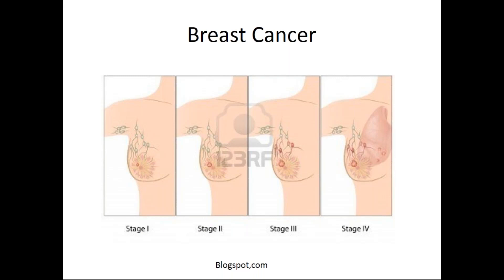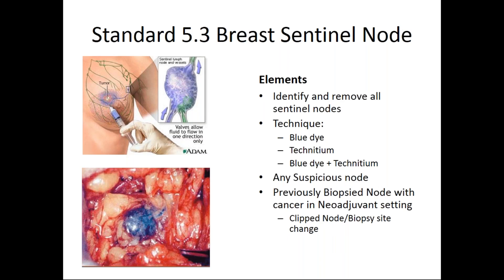The first two standards are for breast cancer. Standard 5.3 involves sentinel node mapping for breast cancer. Key elements in the operative synopsis are that we should identify and remove all sentinel nodes. We need to identify the technique used — whether it's blue dye alone, technetium alone, or blue dye plus technetium. If there are any suspicious nodes that are palpated or look abnormal on visual inspection, those should be removed and documented.